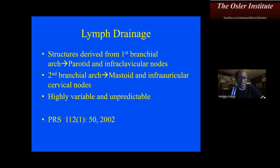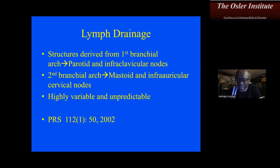Structures derived from the first branchial arch theoretically drain through the parotid and infraclavicular nodes, while the second branchial arch drains through the mastoid and infraauricular nodes. If you get a question about this, keep that in mind — though it's less likely to be asked since the lymphatic drainage pattern has actually been found to be pretty unpredictable.